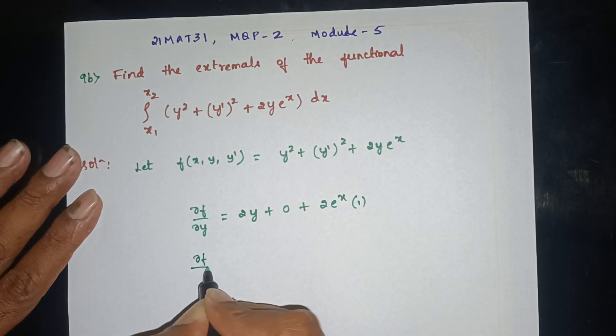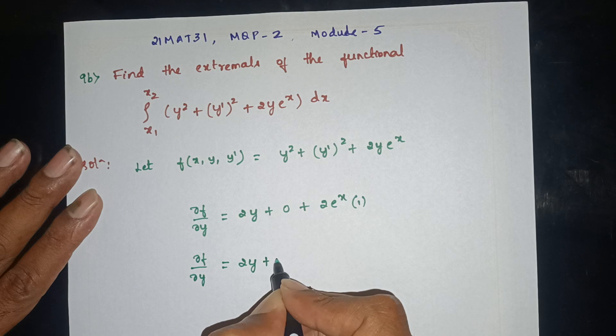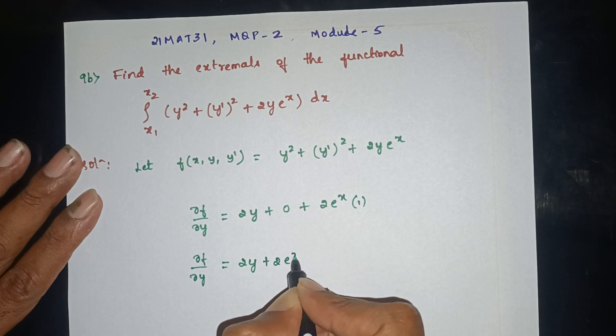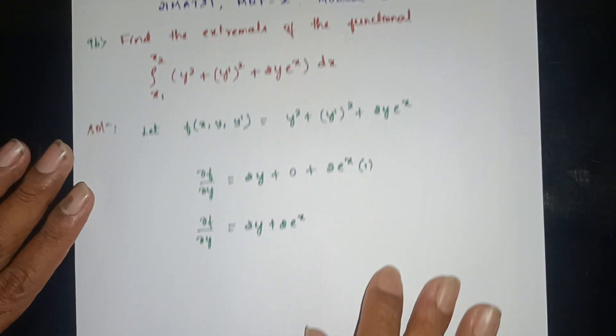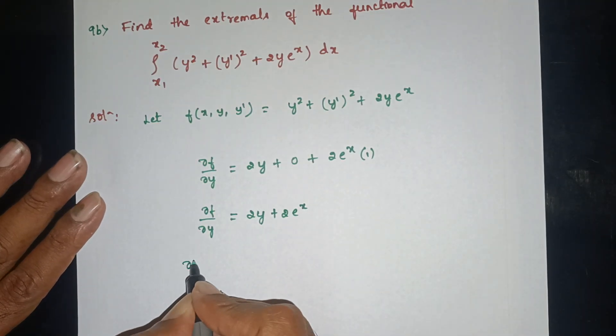Therefore, dou f by dou y is equal to 2y plus 2e to the power x. Next, we compute dou f by dou y-dash.